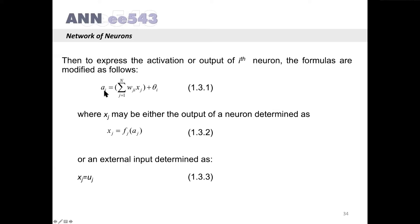The activation for neuron i is equal to the sum from j starting from 1 to n of the connection weight from j to neuron i, multiplied by the output of neuron j, plus the threshold of our neuron. Here, xj may be either the output of a neuron, determined as xj equals the output function of the j-th neuron applied on the activation of the j-th neuron.